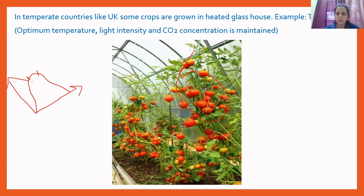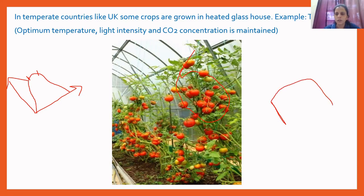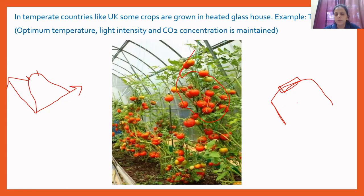In tropical countries, temperature maintenance is very important in glass houses. The top of the glass house generally has a small window left open slightly, so that hot air present inside the glass house can easily escape. Since hot air is lighter in weight, it always moves upward, so any hot air or hot gas inside the glass house can escape through this roof window.